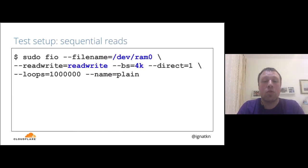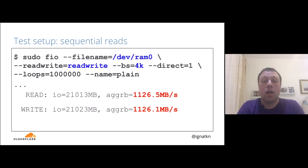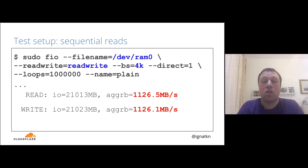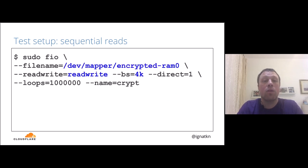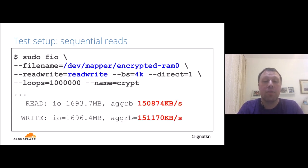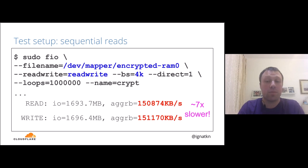First, we measure sequential read/write throughput on the underlying RAM disk using an FIO command. We get about 1 GB/s read throughput and 1 GB/s write throughput — since it's a RAM disk, reads and writes are nearly identical. Now let's see how the same workload performs on the dm-crypt instance with transparent Linux disk encryption. The throughput dropped to 150 MB/s in both directions — seven times slower.